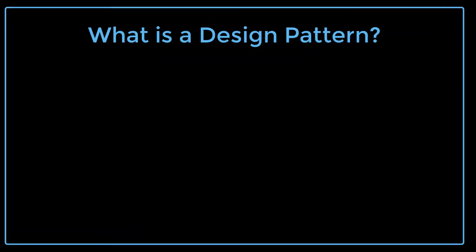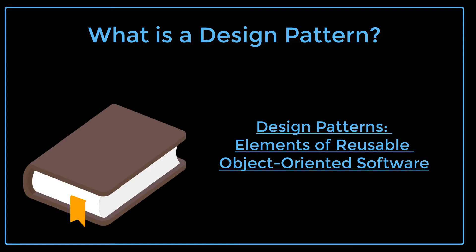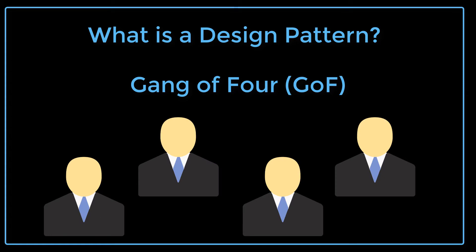In this lecture, we will learn about what design patterns are and who the Gang of Four are. An iconic book, possibly the most important book in all of computer science, called Design Patterns: Elements of Reusable Object-Oriented Software, was published over 20 years ago on October 21st, 1994. There were four authors, all of whom were computer scientists, that have been nicknamed the Gang of Four.